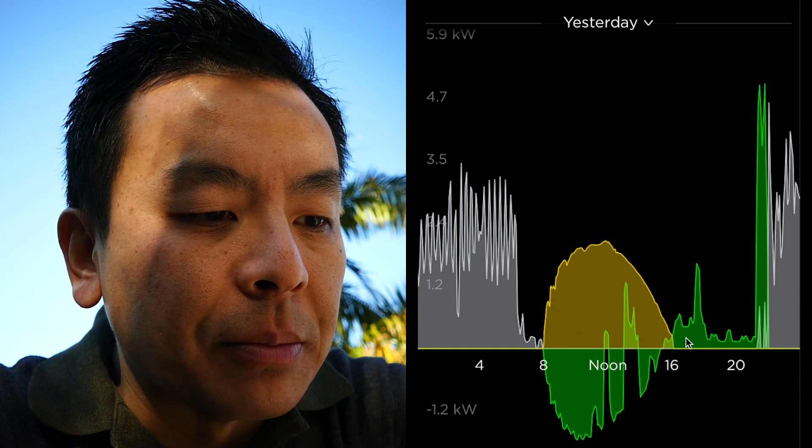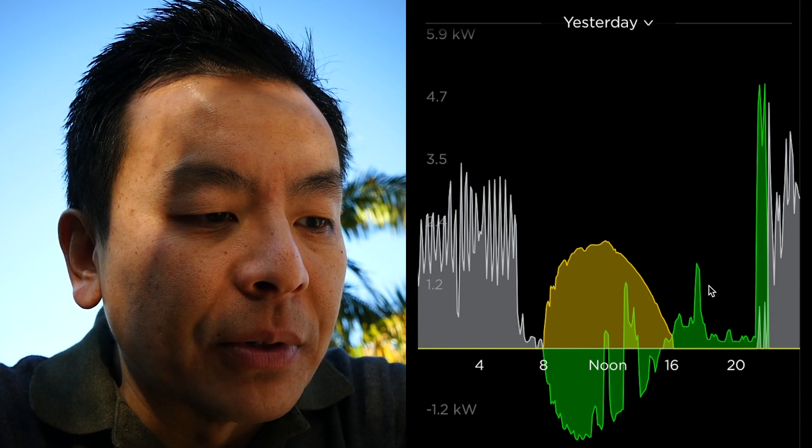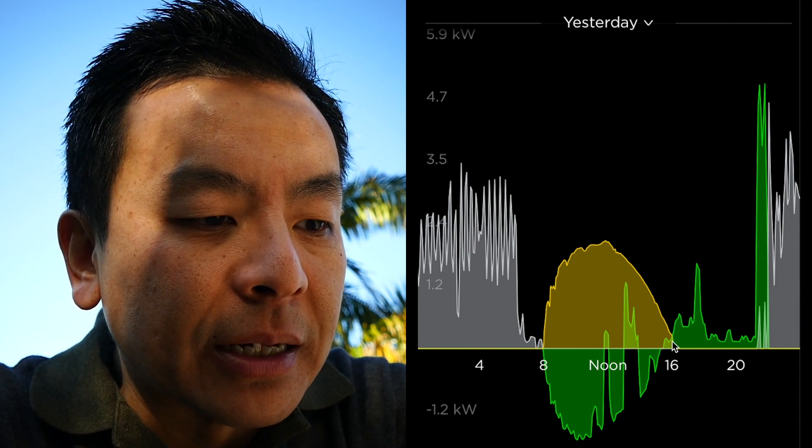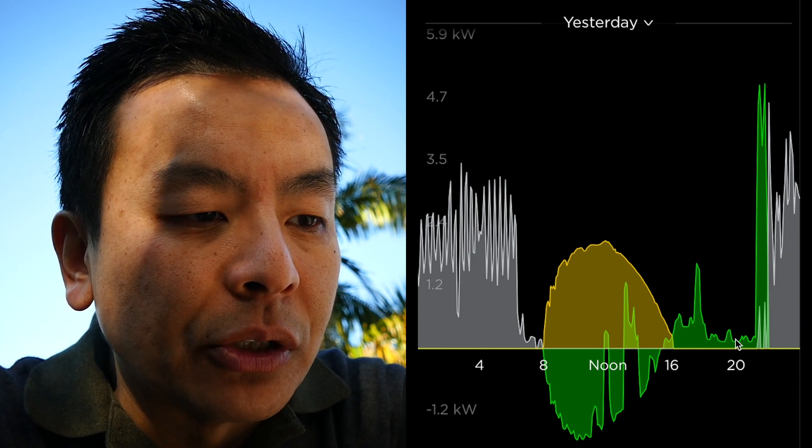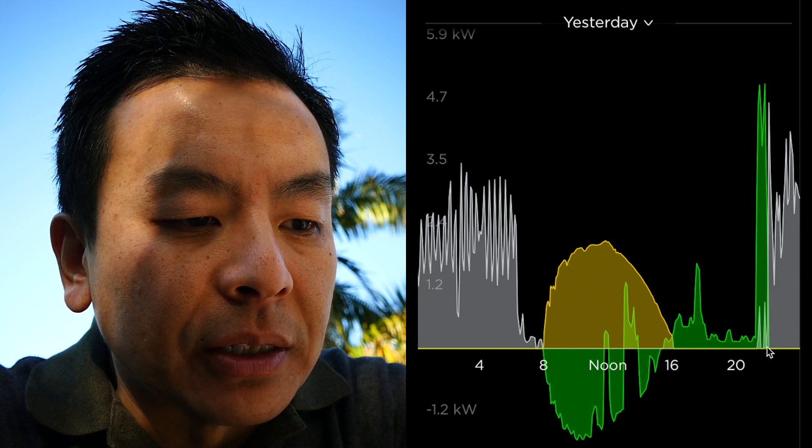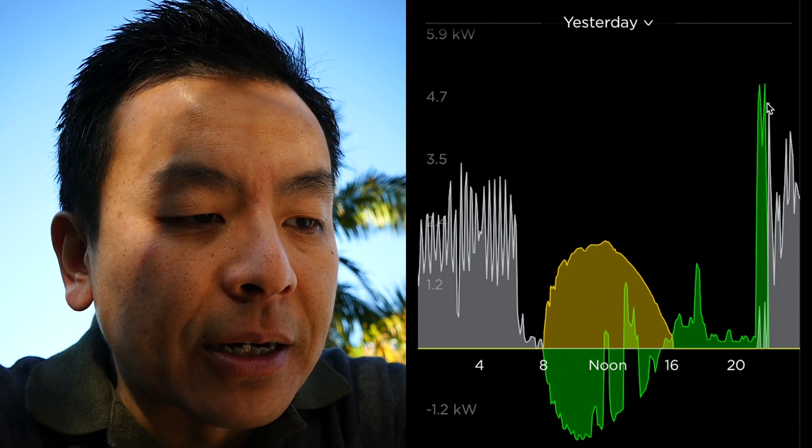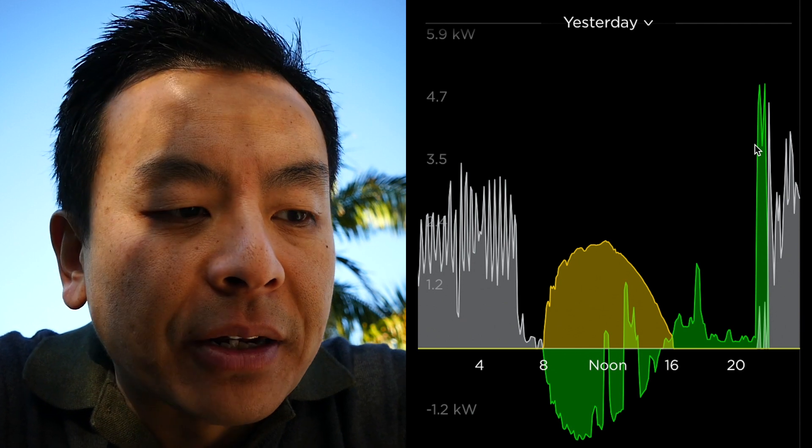Now at night times you can see when everyone's home and doing things, the Powerwall 2 is discharging and covering the household usage. And we get to about 10 o'clock at night time and that's when the heaters come on at night time.